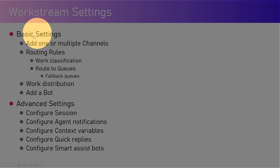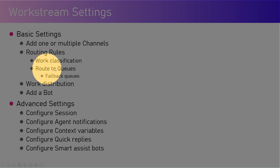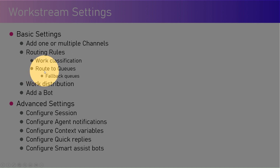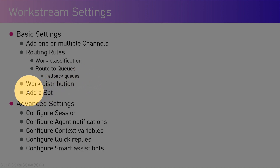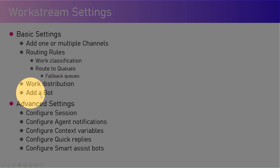There are basic settings and advanced settings in a workstream. In basic settings, you can attach your workstream to multiple channels, define routing rules for how work is classified and queued, configure fallback queues, and set the work distribution mode — whether it's push or pick. You can also add a bot to the workstream.